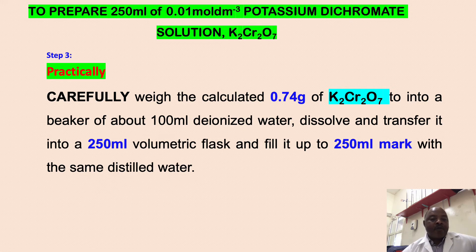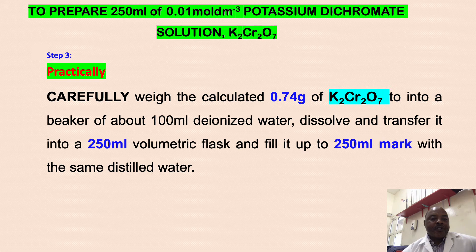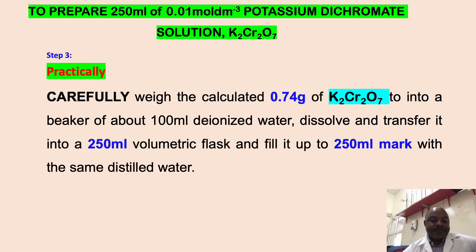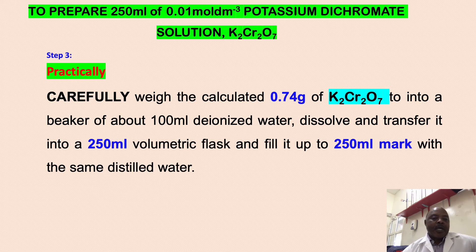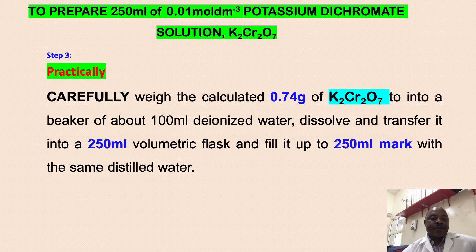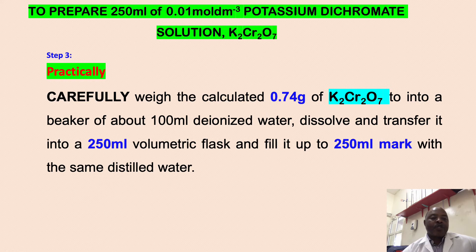Now, you will carefully weigh using the balance 0.74 g of potassium dichromate. Transfer it into a beaker of about 100 ml deionized water. Using the glass rod, dissolve it properly and transfer it into a 250 ml volumetric flask.